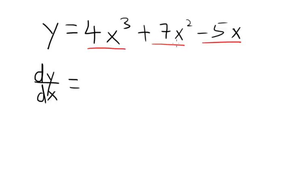4x cubed, when you differentiate it, remember that you need to do the multiplication first and then minus 1. We bring the power to the front and multiply it, therefore you get 12x. Now the 3 minus 1, so you get 12x squared.